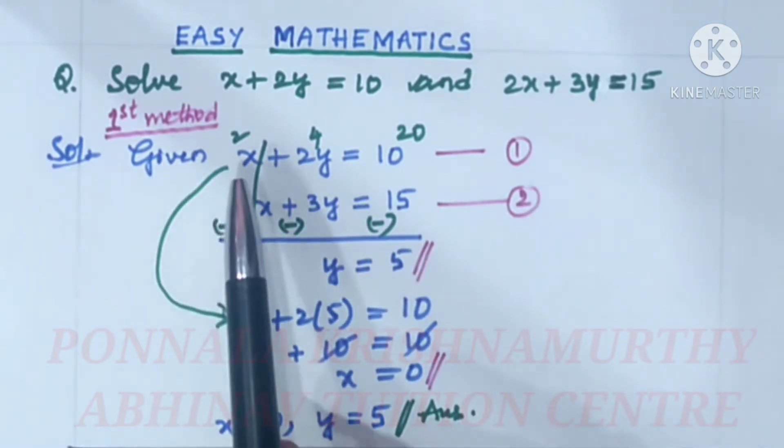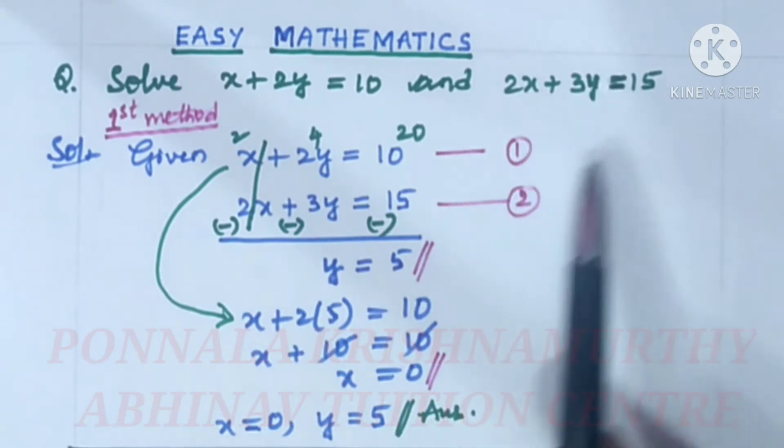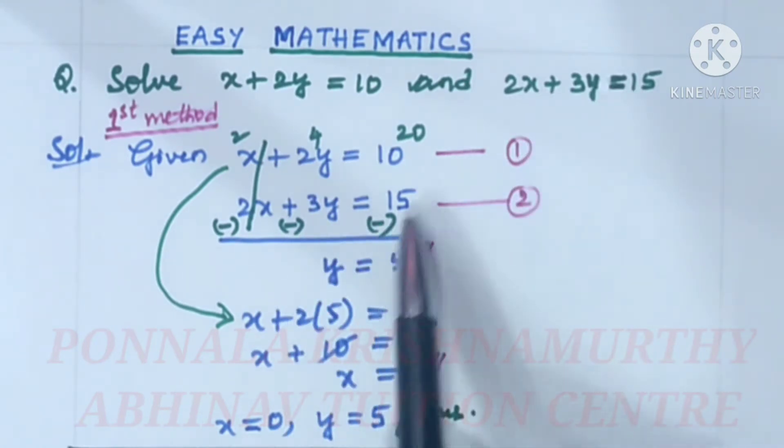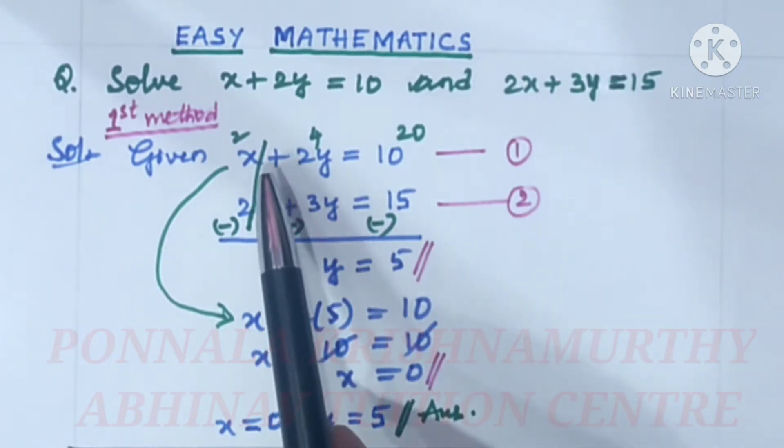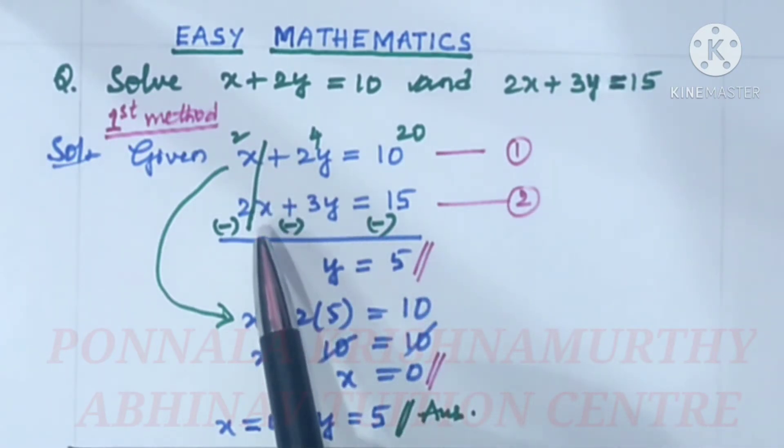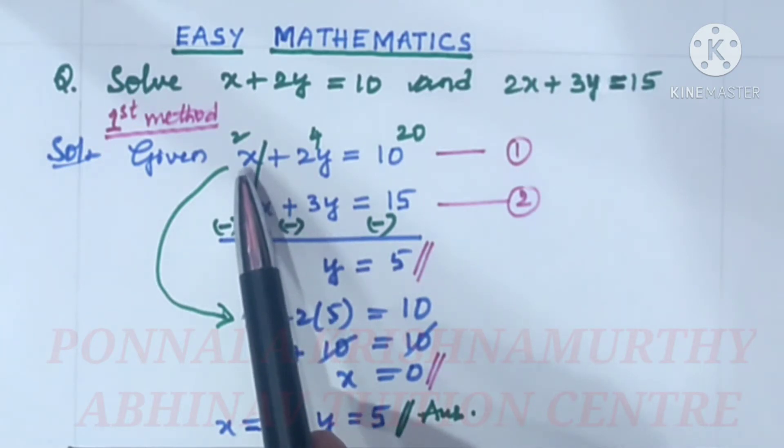First method. Given x plus 2y equal to 10 and 2x plus 3y equal to 15, equation 1 and equation 2. To cancel x terms, we need to have the coefficients of x equal. Since this is 2, if we multiply this one by 2, we will get 2x here also.